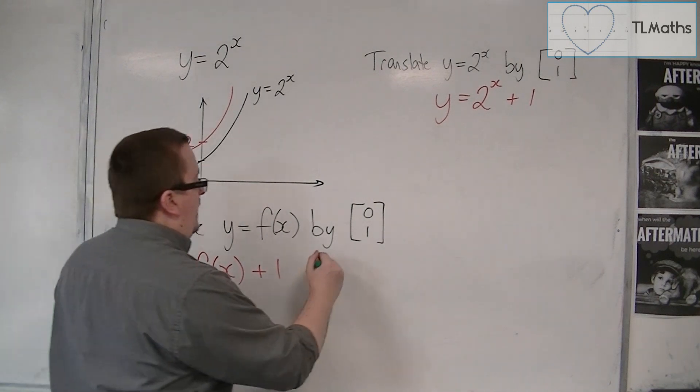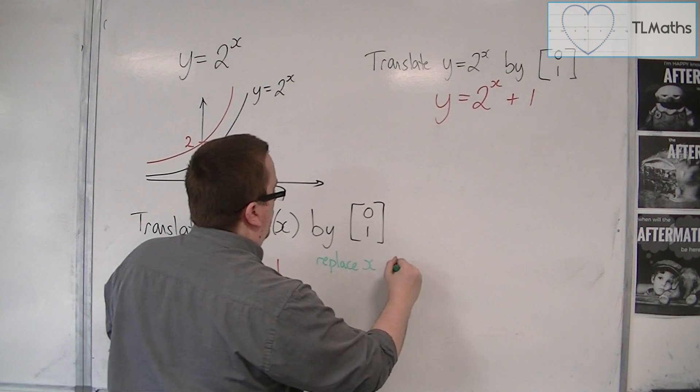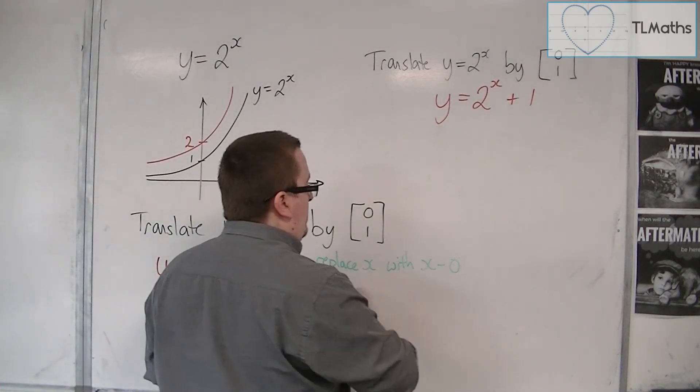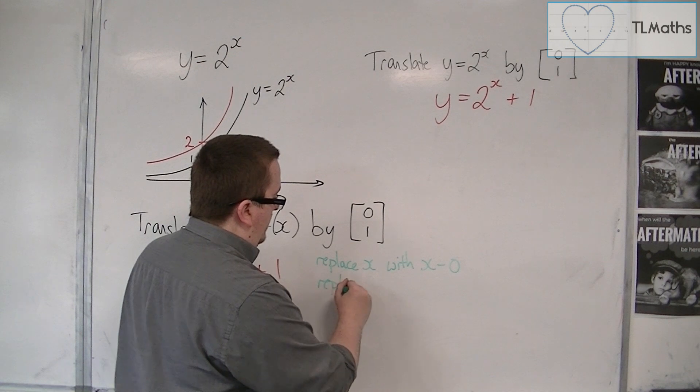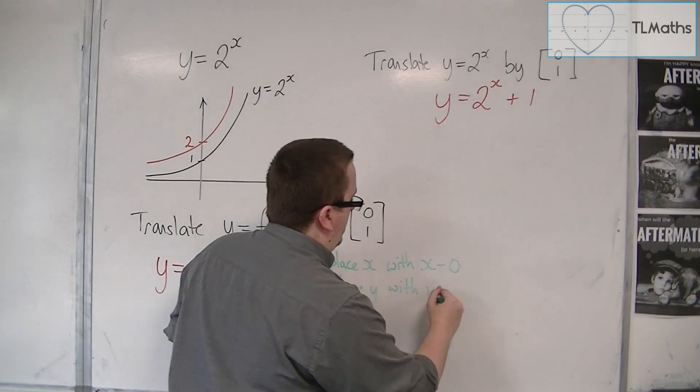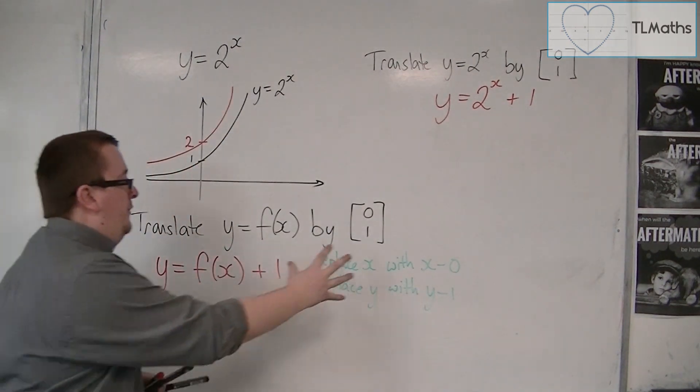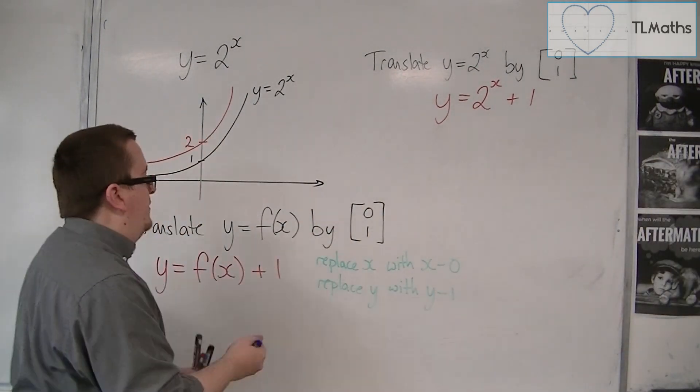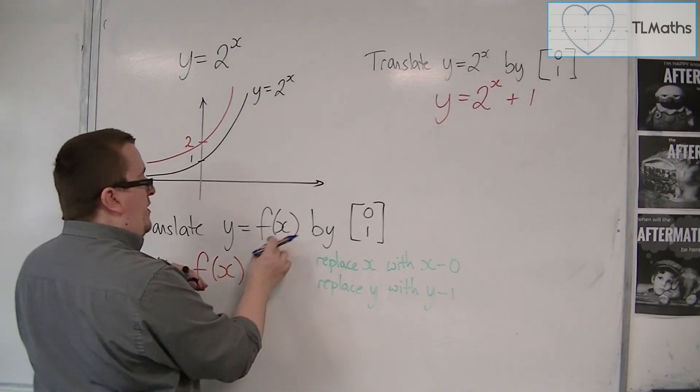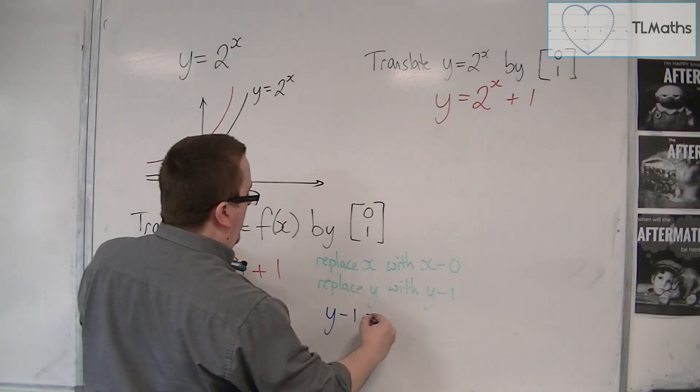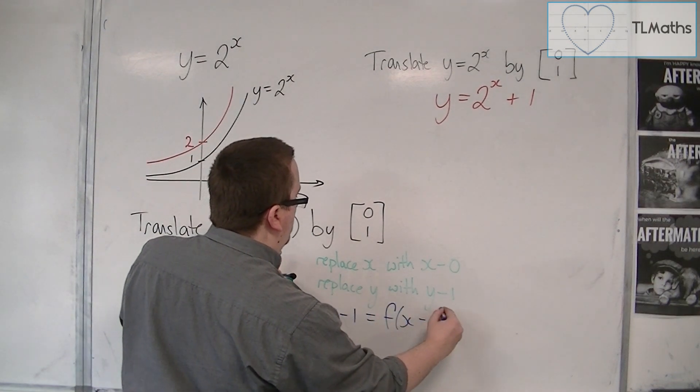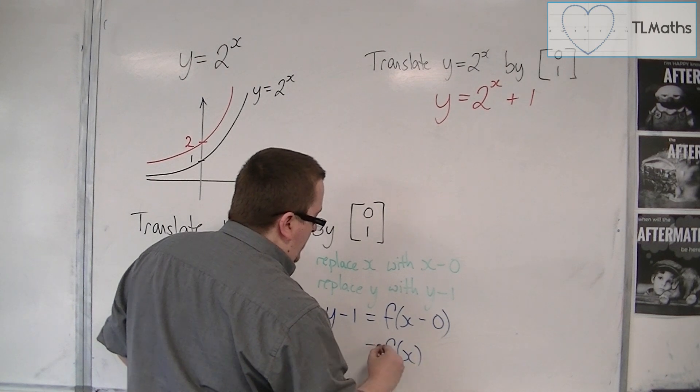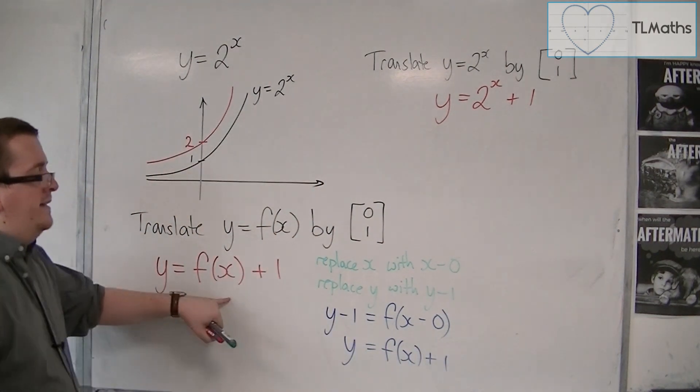So, what's happening is you're replacing x with x minus 0, so the x stays exactly the same because x is the same as x minus 0. And you're replacing y with y minus 1. Now, how does this link in with that? It links in by saying, if I'm replacing x with x minus 0 and y with y minus 1, I now have y minus 1 equals f of x minus 0. So, y minus 1 equals f of x, and then you can just add the 1 to both sides of the equation, and you get to this format.